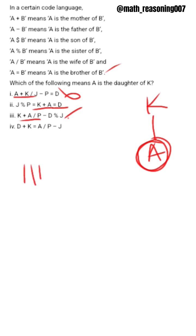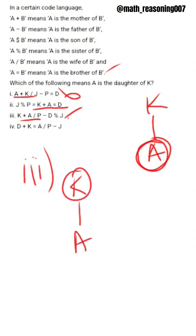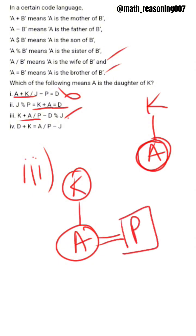Now option 3. From option 3, K plus A — here K is mother of A. And we need to find the gender of A. A slash B — here A is wife of B. So this satisfies the question. So option C is the answer.